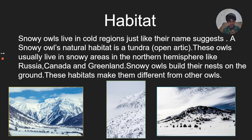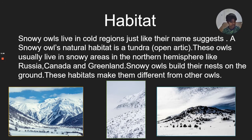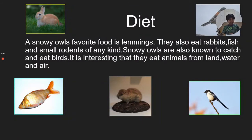The next thing I want to talk about is the habitat of the snowy owl. Snowy owls live in cold regions, just like their name suggests. The snowy owl's natural habitat is the tundra — an open arctic area. They usually build their nests on the ground in the tundra. They live in tundras in the northern hemisphere, for example in Russia, Canada, and Greenland, near the Arctic Circle.